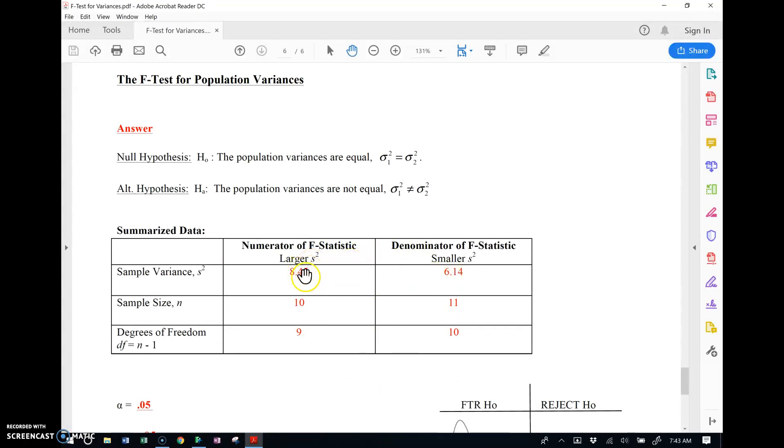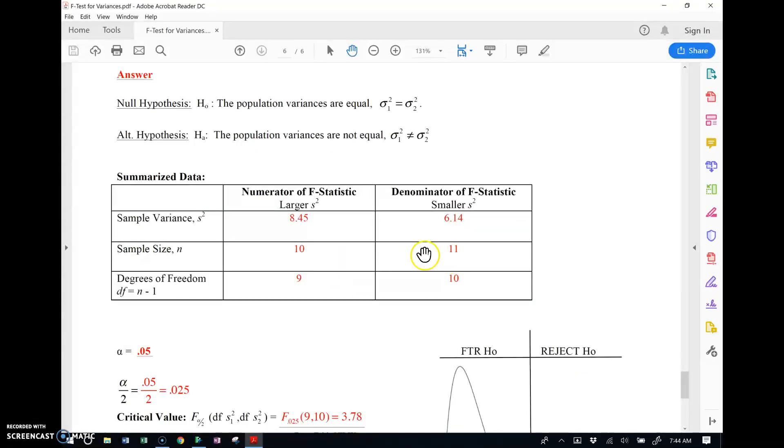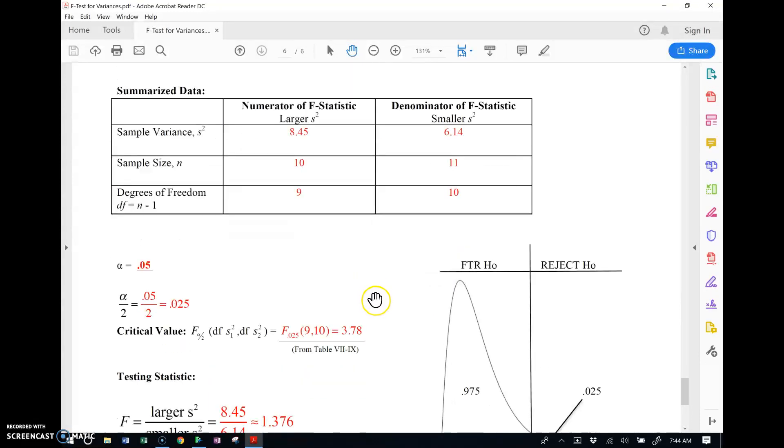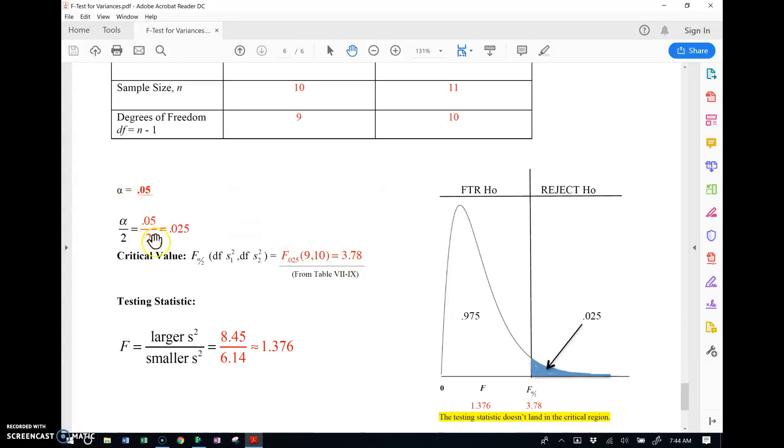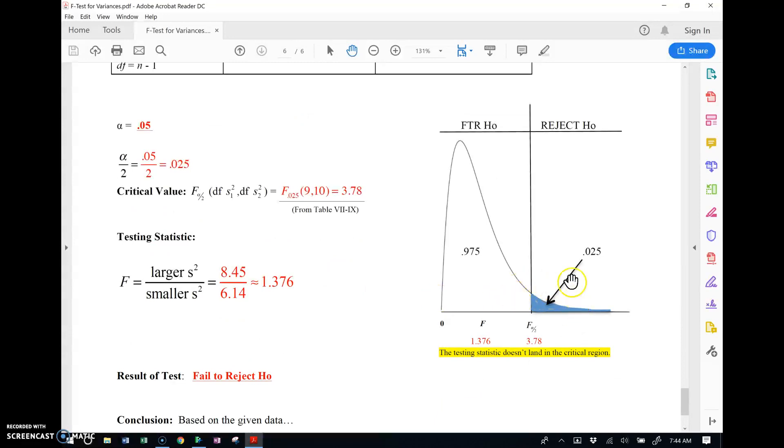Sample variances, remember the numerator always contains the larger population variance so that when you take your F-ratio you're always getting values greater than one. Sample sizes and the appropriate degrees of freedom. Alpha was 5%, alpha divided by 2, 0.025, remember we divide by 2 because we always perform a right-tailed test with the F-test. Critical value comes from the table, I'll show you how to grab that in JUMP. JUMP will do that for me.